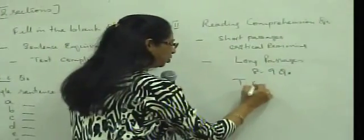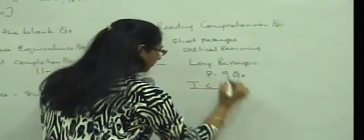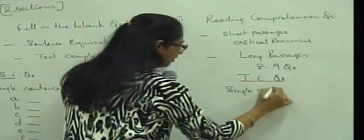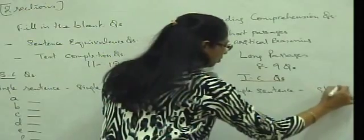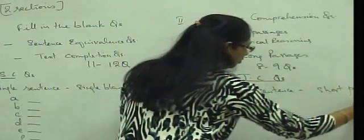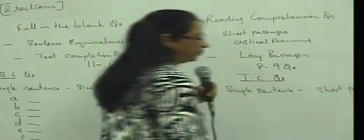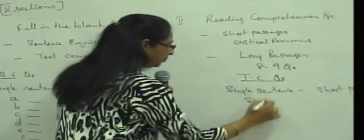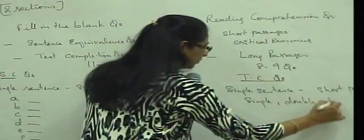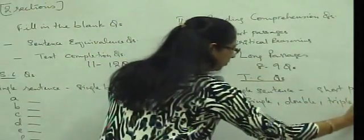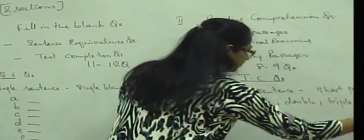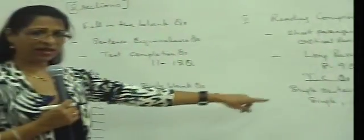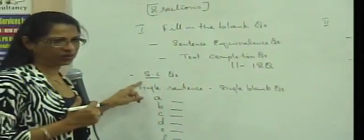Now, coming to the text completion questions, you have here anywhere from a single sentence to a short paragraph as your question. The text completion questions have single, double or triple blank questions. If you were to get a single blank, how do I distinguish the single blank text completion question from a sentence equivalence question?